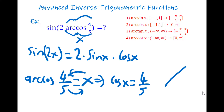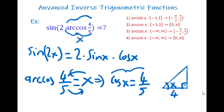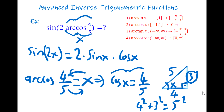In such questions I recommend you draw a right triangle. This is 90° and this angle is x. Apply the value: cosine is adjacent over hypotenuse, so adjacent is 4 and hypotenuse is 5. By the Pythagorean theorem, 4² + 3² = 5², so the remaining side is 3.